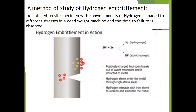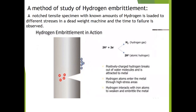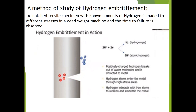A method of studying hydrogen embrittlement involves a notched tensile specimen with known amounts of hydrogen, loaded to different stresses in a dead-weight machine, and the time of failure is observed. Positively charged hydrogen breaks out of water molecules and is attracted to the metal. Hydrogen atoms enter the metal through high-stress areas and interact with iron atoms to weaken and embrittle the metal.